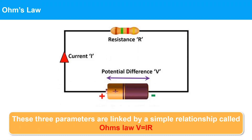These three parameters — V, I, and R — are linked by a simple relationship called Ohm's Law: V equals I times R, meaning voltage equals current multiplied by resistance.